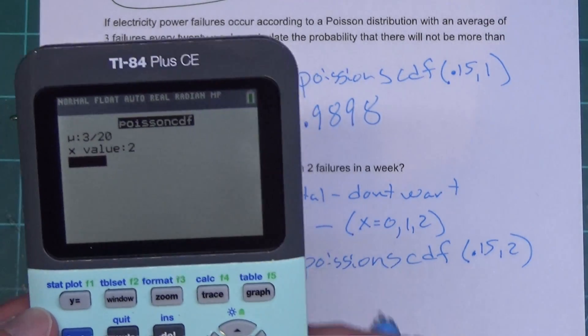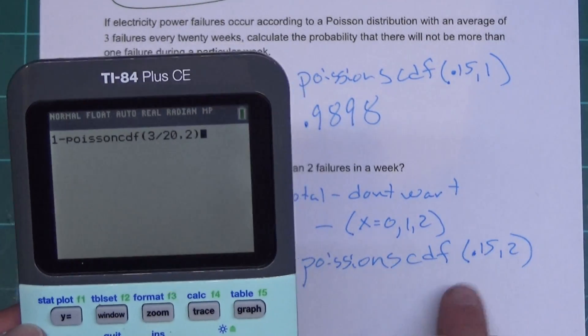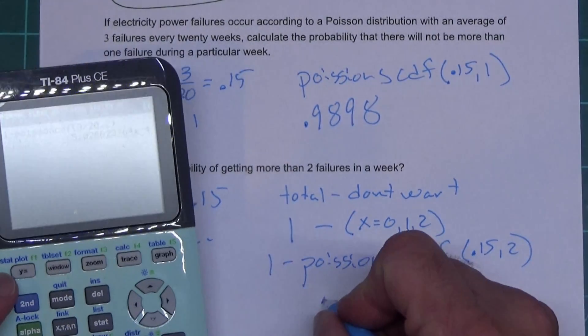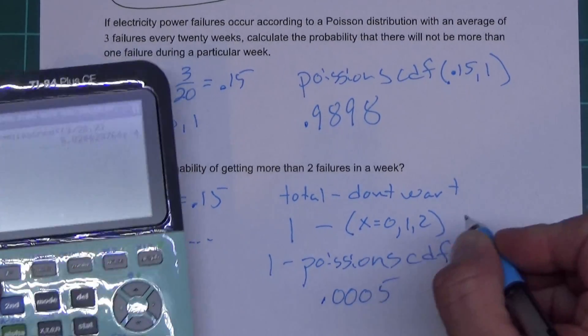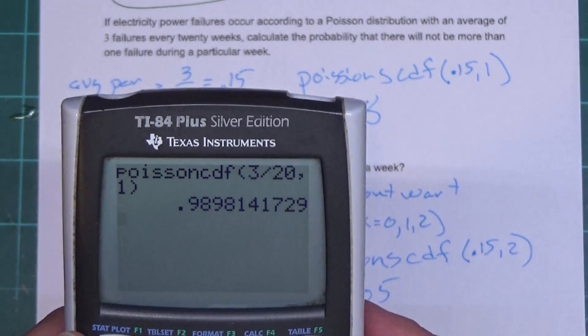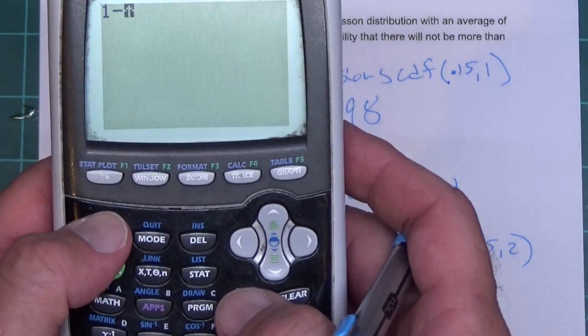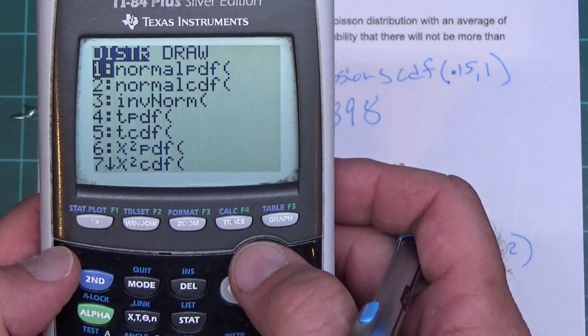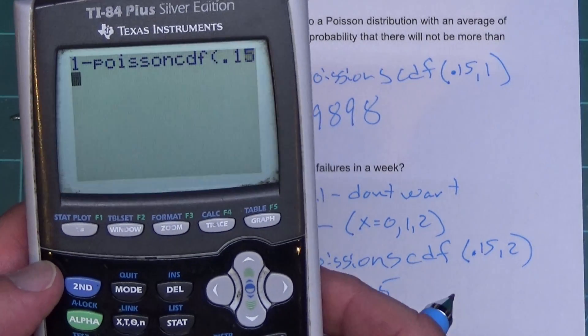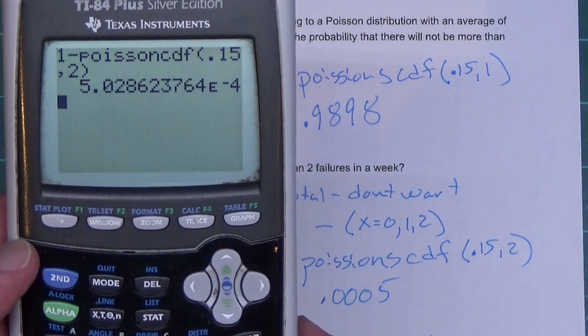Okay, the 3 over 20 is still there, but this time I'm gonna change that X to two. I hit paste - notice it now says one minus, like I wrote on the paper. Press enter, and I'm getting 0.000059. Well, this old 84 is gonna work the same way. You're gonna hit one minus, now I can hit my second VARS, go up to Poisson's CDF. I can type the 0.15 comma two just like I did in the other one. Press enter and I'm getting the same answer.